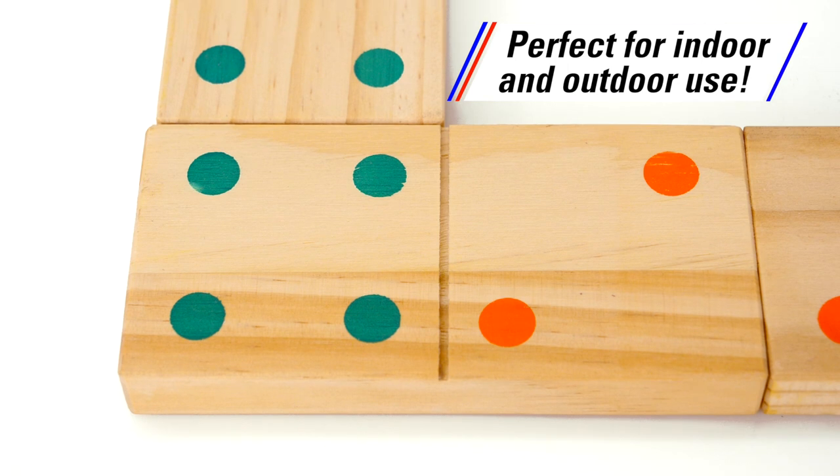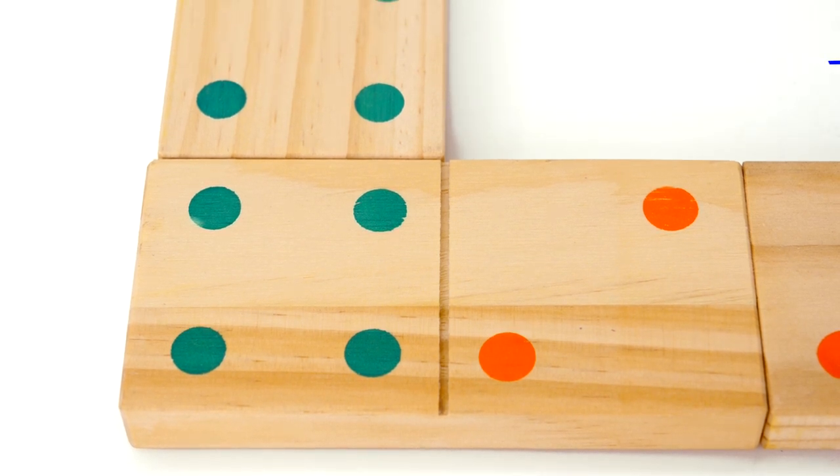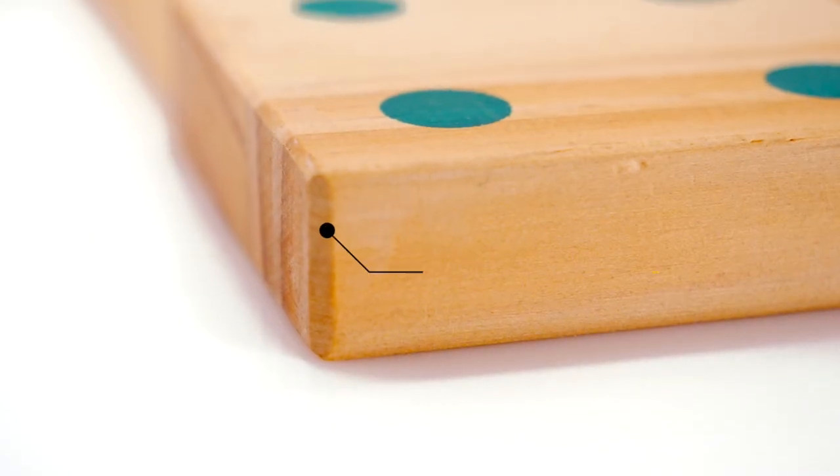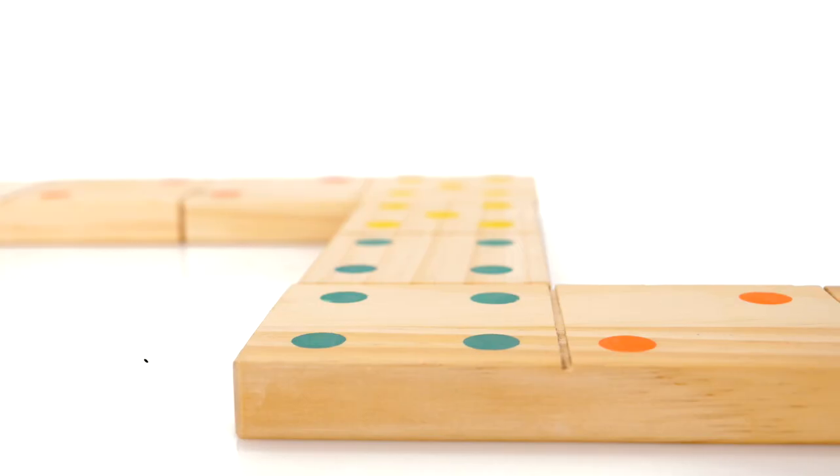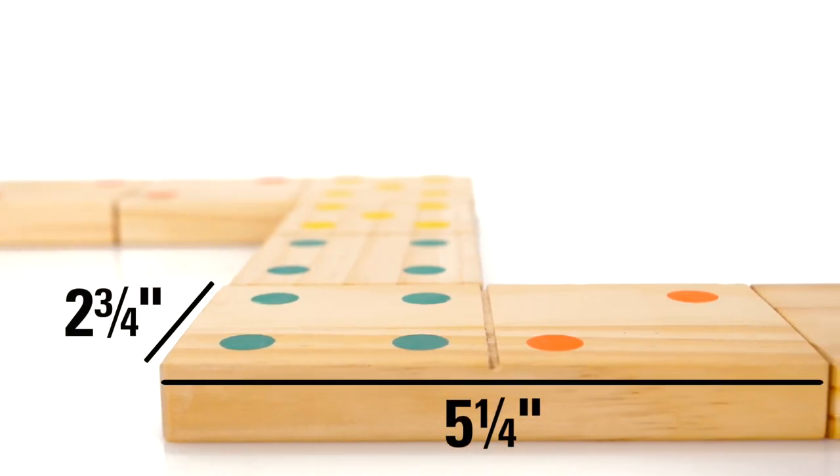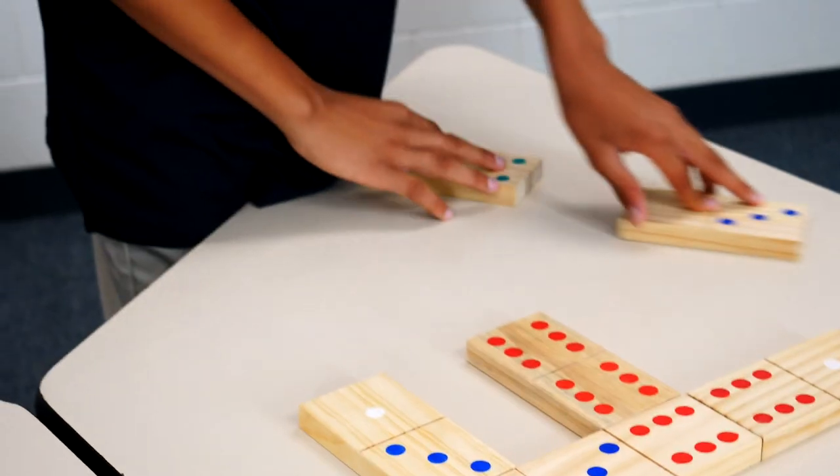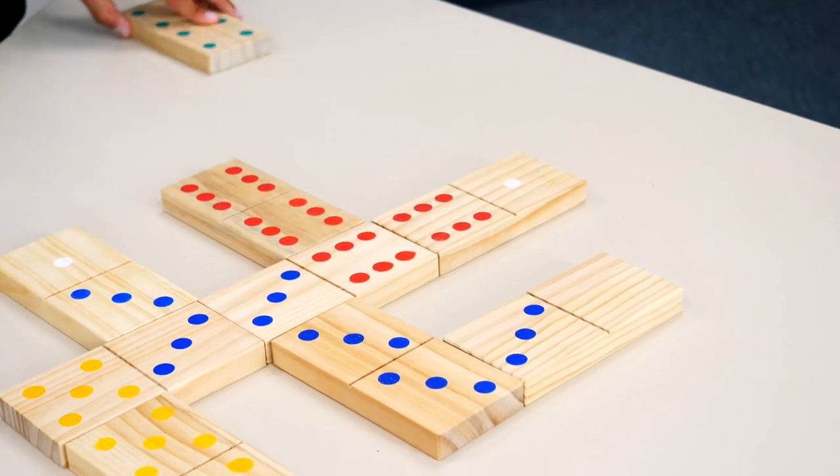These dominoes are perfect for indoor or outdoor use. The fun goes on and on. Made of wood with rounded corners for safety, these five and a quarter inch by two and three quarter inch dominoes feature colorful dots for even more game options.